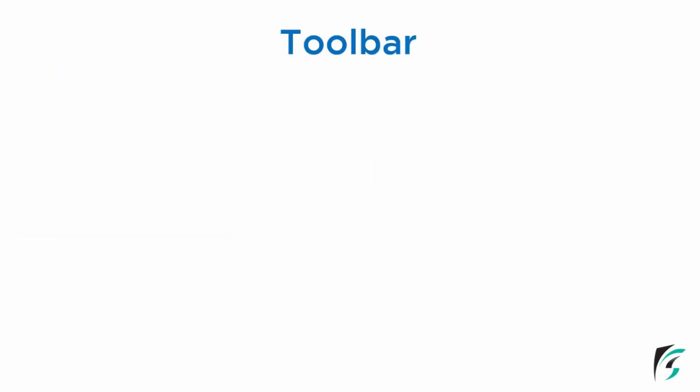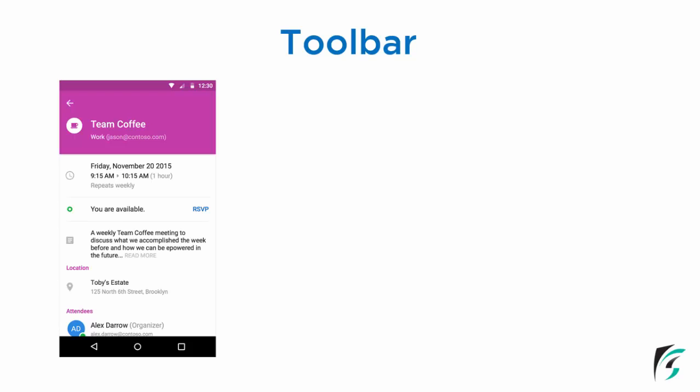Let us learn about the toolbar in a little more detail with a pictorial representation. In this image shown on the left side of the screen, this is the toolbar. In this toolbar, there is a navigation icon on the top left. Below it there is an image view, and beside the image view there is a title and a subtitle. This toolbar in this image is a big toolbar. The size of the toolbar can be customized according to the need of the application, but it has to follow the Google standards.